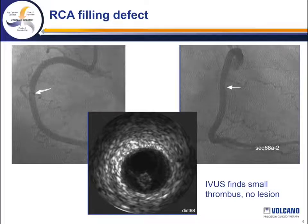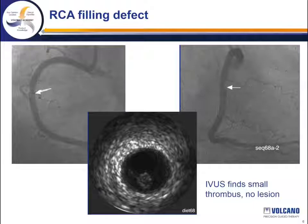In this case, IVUS finds a small thrombus basically floating on the edge of the vessel, but no real underlying pathology. The etiology for that is unclear, but no specific treatment was performed once we knew that there was no underlying lesion.